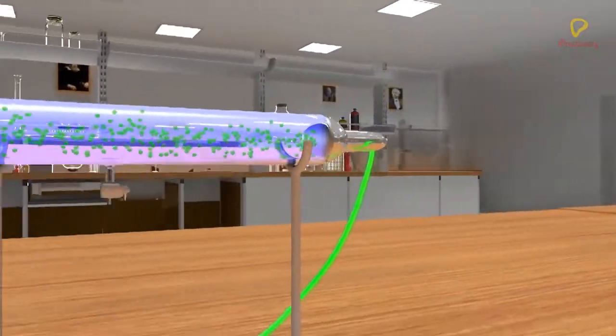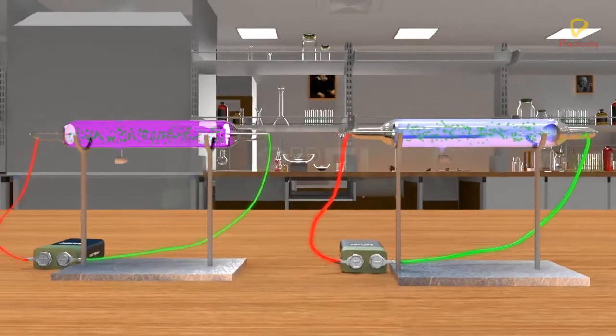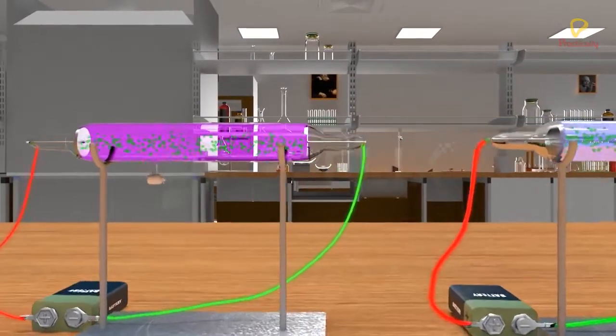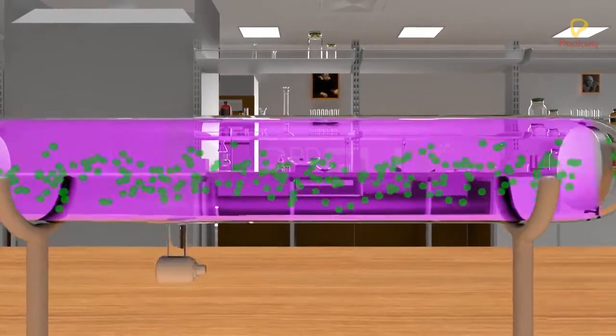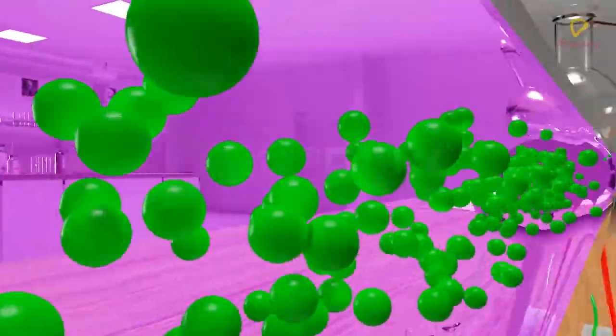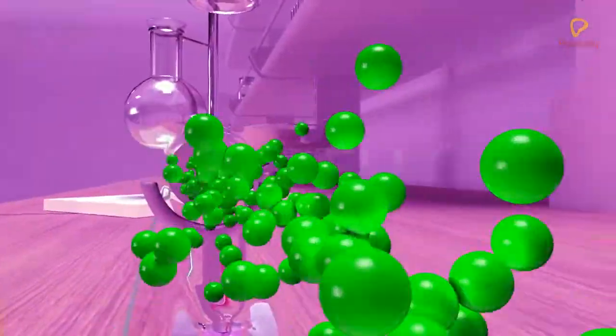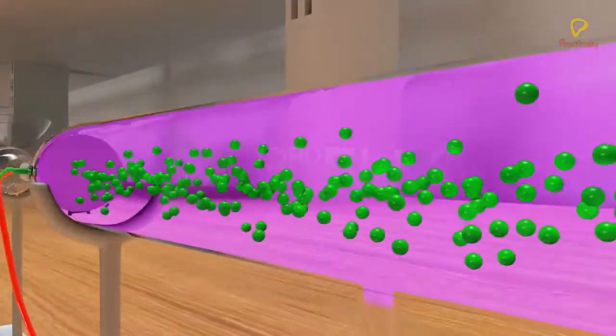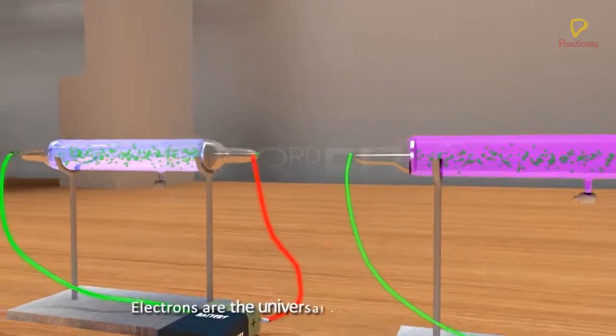Through a series of experiments, Thompson observed that the properties of cathode rays do not depend on the nature of electrodes or the nature of gases present in the cathode ray tube. This led him to conclude that electrons are the basic constituents of all matter.